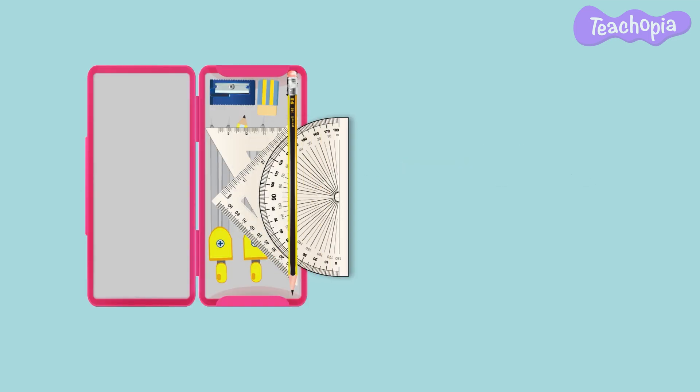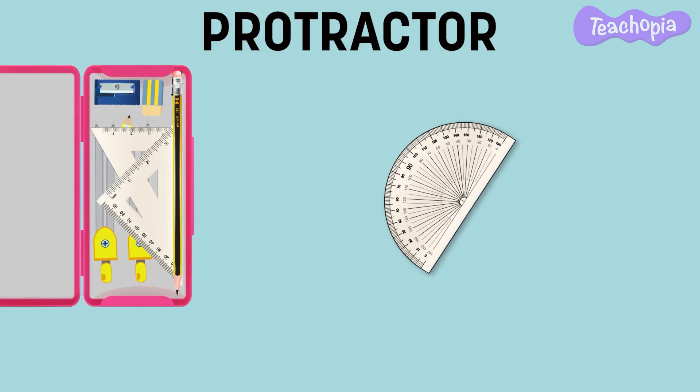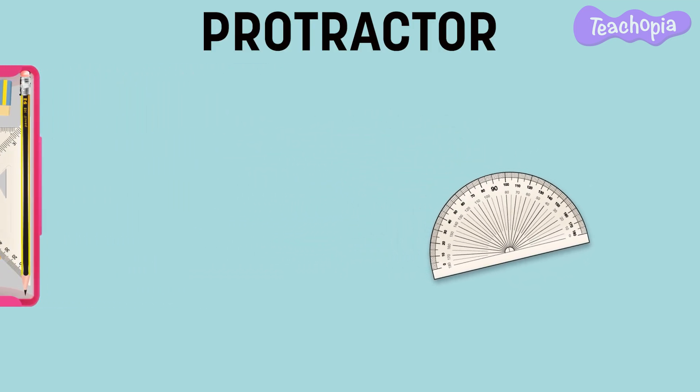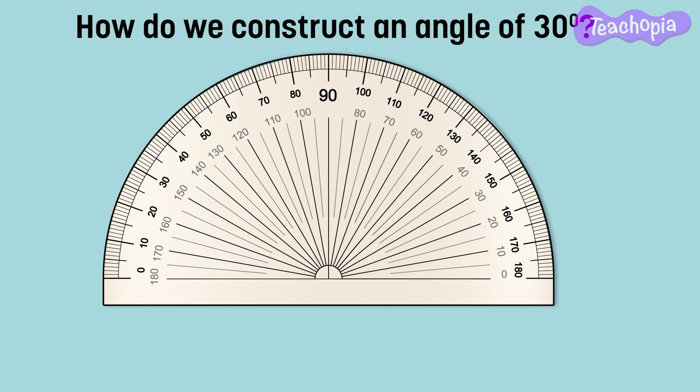Next let us learn about the protractor. This instrument in the geometry box is used to measure or construct any angles. Now how do we construct an angle of 30 degrees?